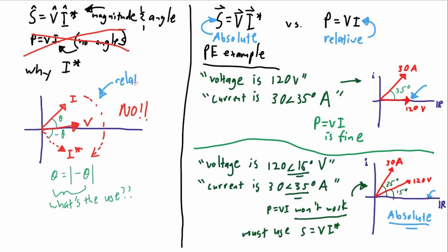So, if you're using P equals VI and entering in voltage angles in your calculations, it's very clear that you're doing it wrong.